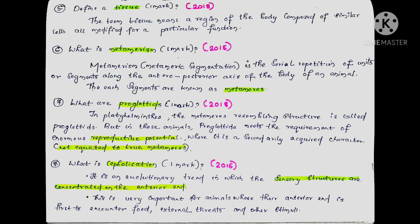The next question is: what are proglottids? This is an important question from 2018. Proglottids are metamere-resembling structures found in tapeworms. However, proglottids represent the requirement for enormous reproductive potential and are a secondarily acquired character — they are not equated to true metameres.